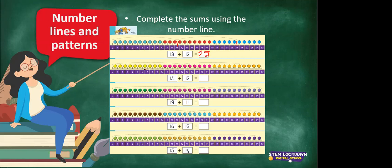Now we are going to carry on the same thing. Remember we start at 0 and the sum is 14 plus 12. So you find 14. Can you see it? There it is. Now we are going to count 12 on: 1, 2, 3, 4, 5, 6, 7, 8, 9, 10, 11, 12. And that brings us to the answer of 26.